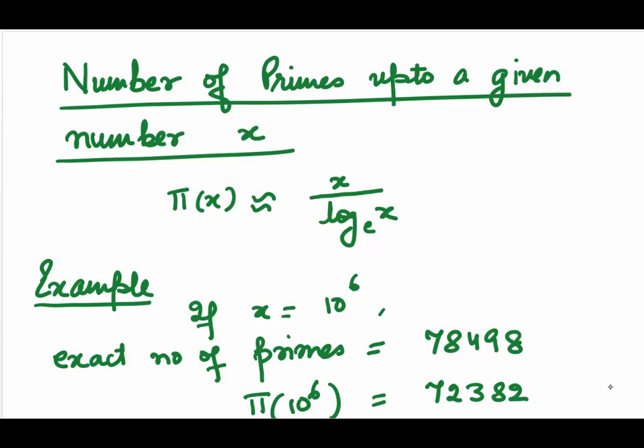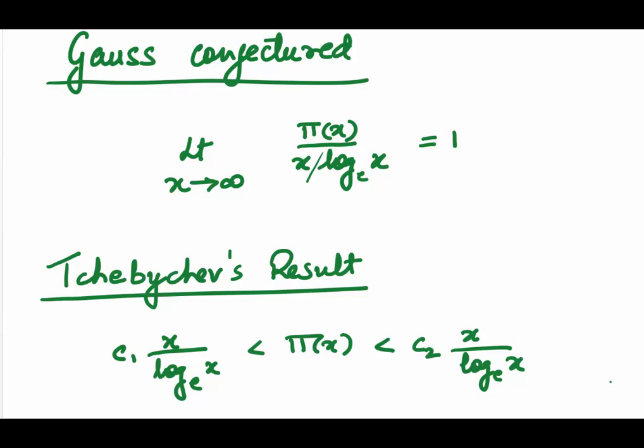If we take x to be 10 to the power 6, then the exact number of primes are 78498. But the formula gives us an approximate value 72382. Gauss also conjectured that the limit extending to infinity π(x) upon x by natural logarithm x is always equal to 1. There was another result by Chebyshev who gave a range. He said π(x) lies between constant c1 times x upon natural logarithm x and c2 another constant times x upon natural logarithm x.